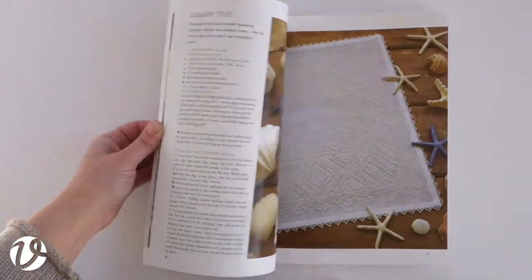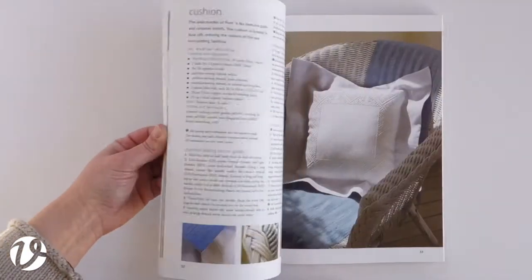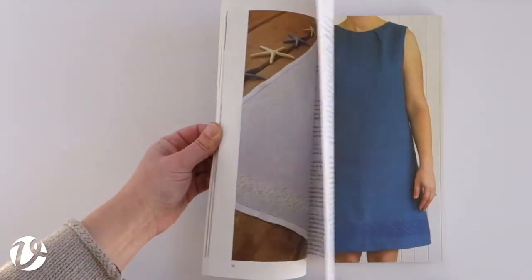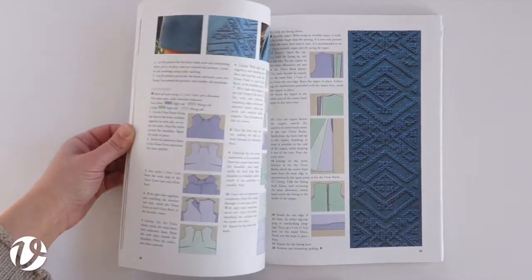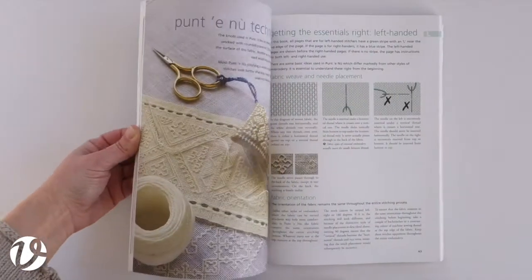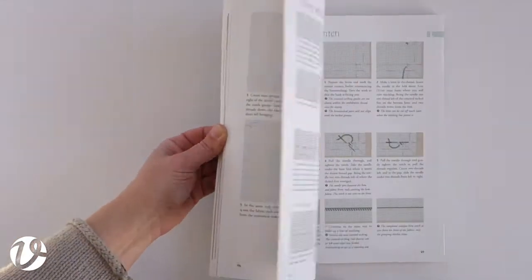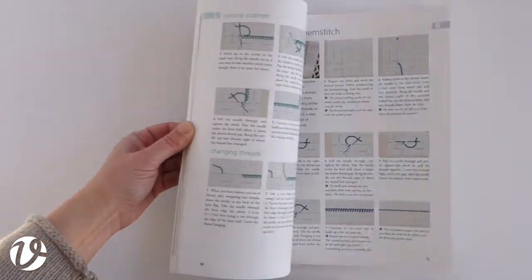In the projects chapter there are 11 beautiful projects. This style of white work embroidery called Punt Ae Nu comes from the town of Teulada in Sardinia. It features tiny little knots worked on the surface of the fabric.